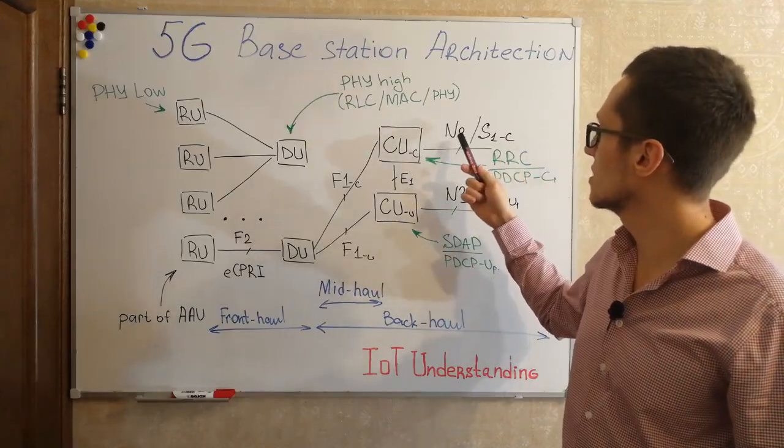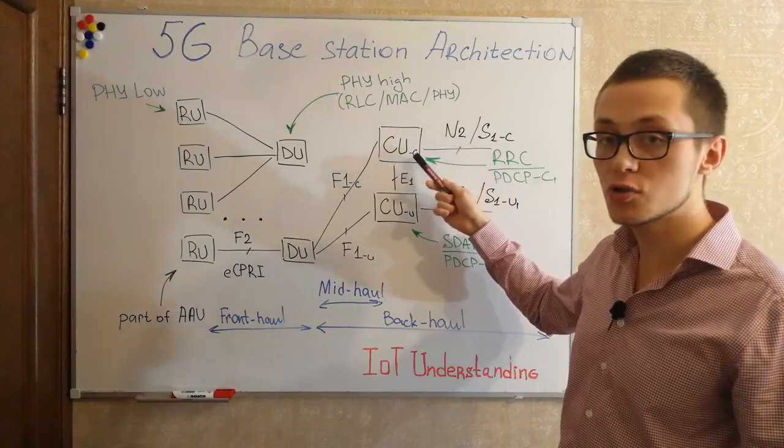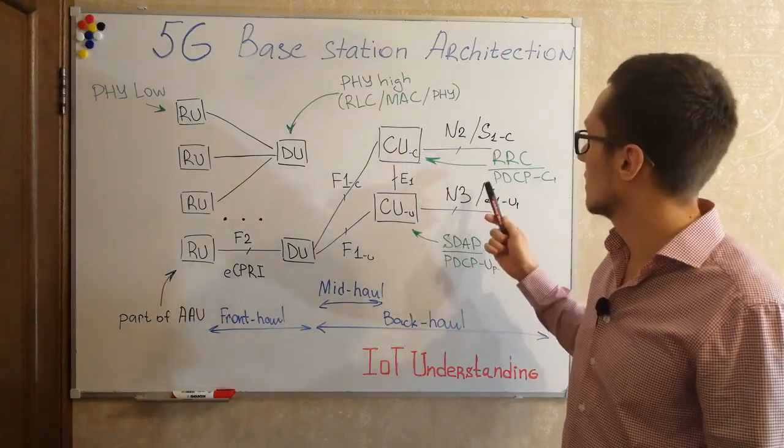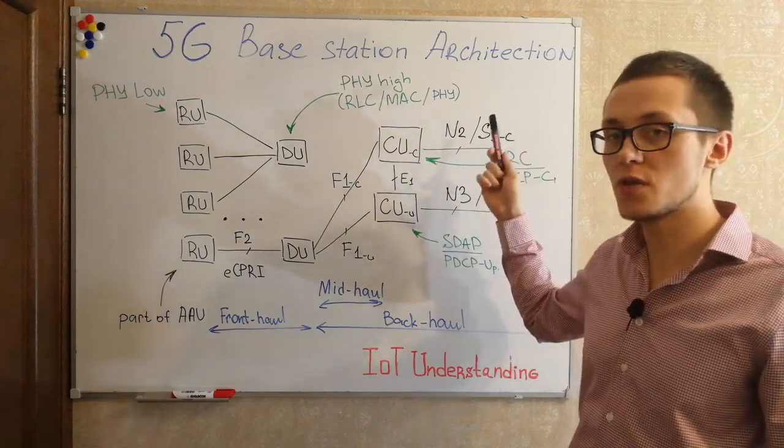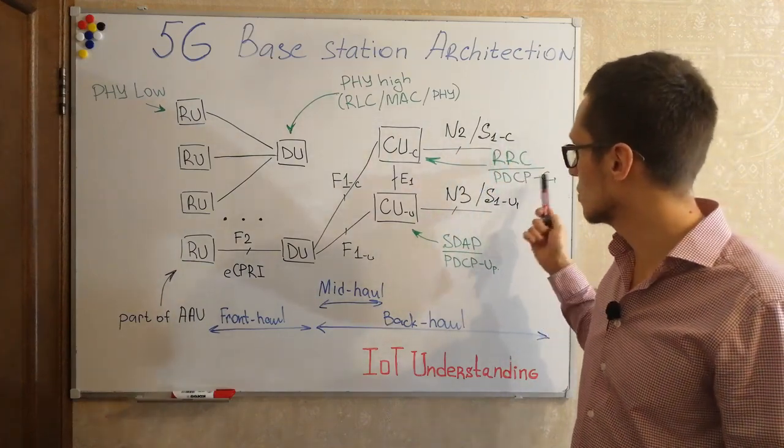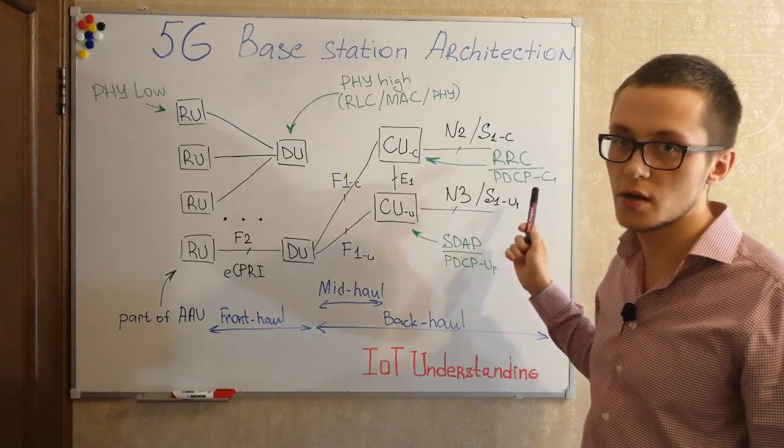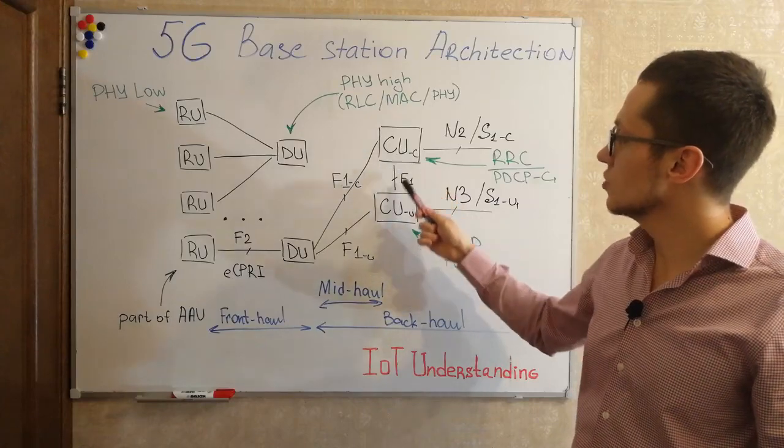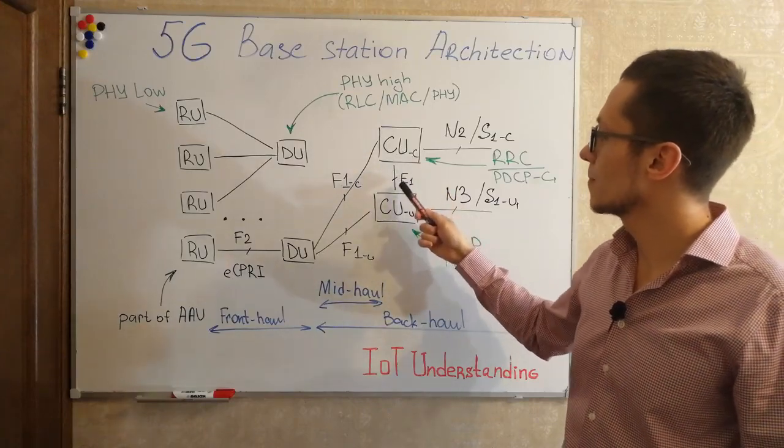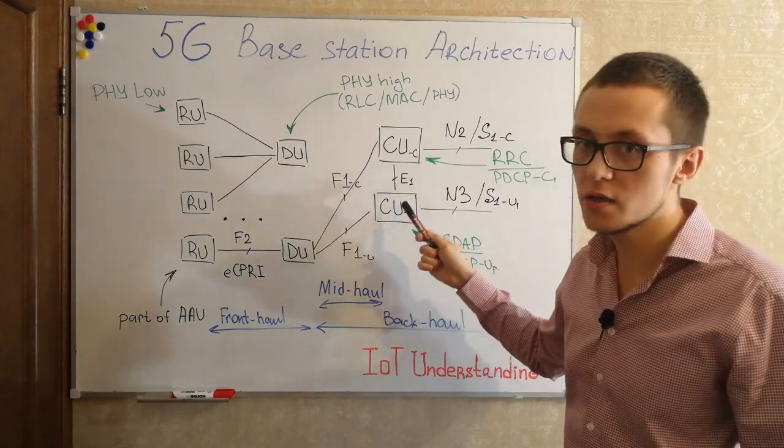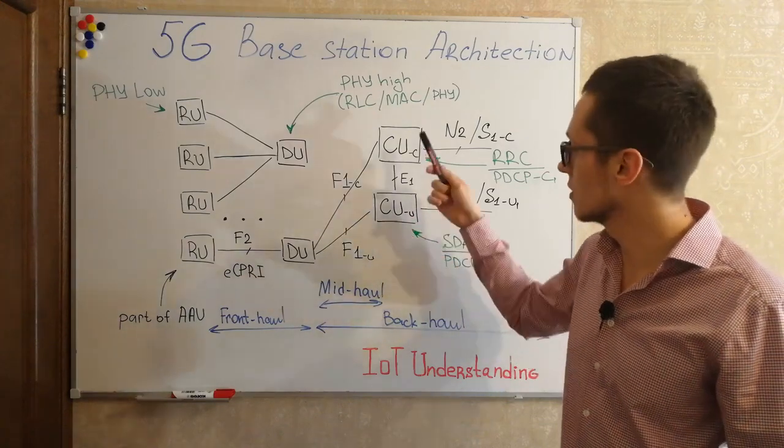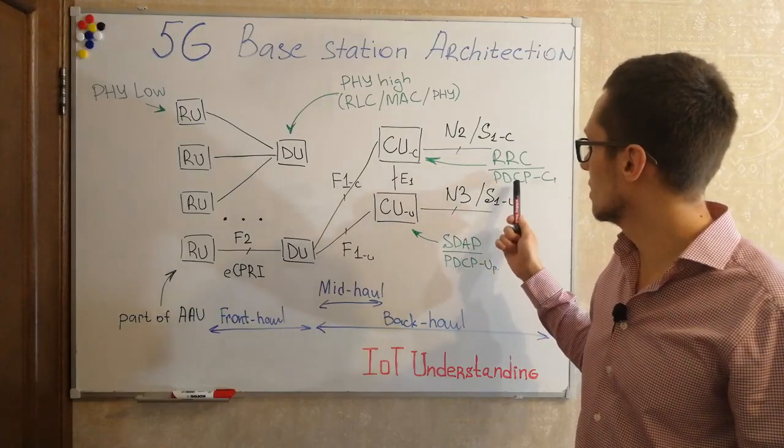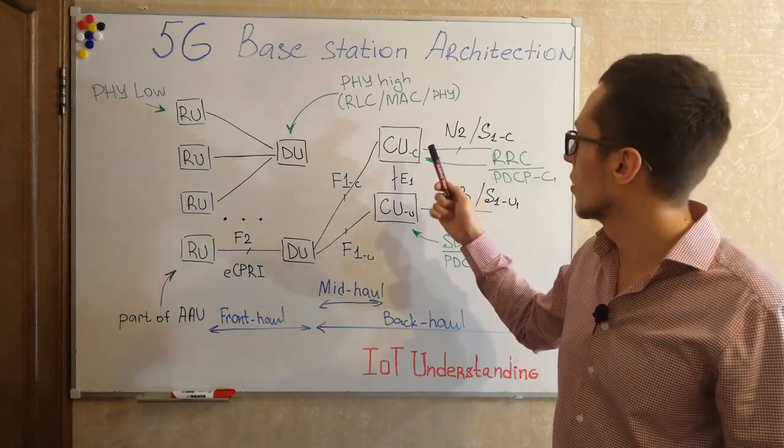And of course there are interfaces. This is N2 for control plane and N3 for user plane. And in case of dual connectivity with LTE this is S1 control plane and S1 user plane to gateways. Between central units we can have an interface E1 in order to handle information between them, some information related to PDCP or RRC layer.